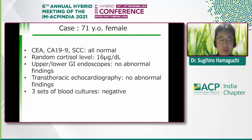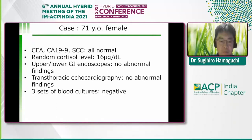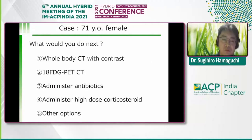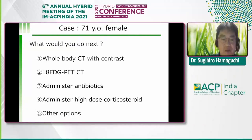There were no abnormalities in tumor markers, cultures, or upper and lower GI endoscopies. Transthoracic echocardiography showed no abnormalities, and three sets of blood cultures were all negative. She was admitted for further evaluation. The question now is: what would you do next — full body CT with contrast, 18-FDG PET-CT, administering antibiotics, administering high-dose corticosteroids, or something else?